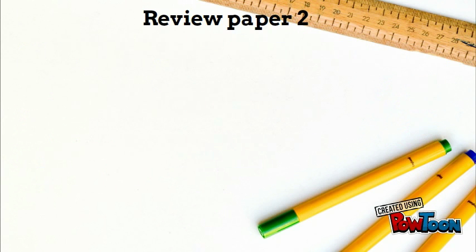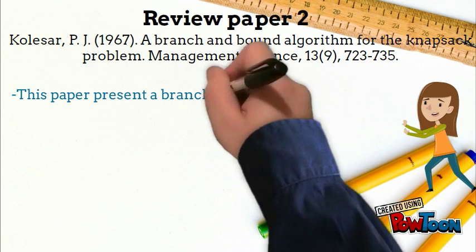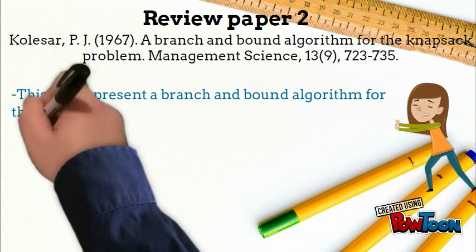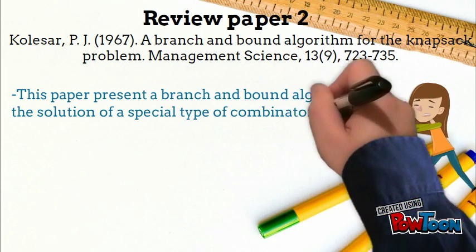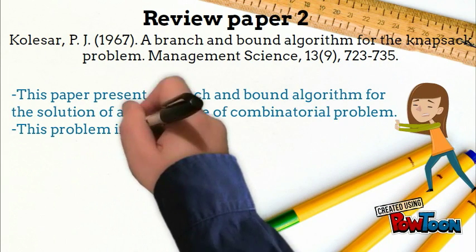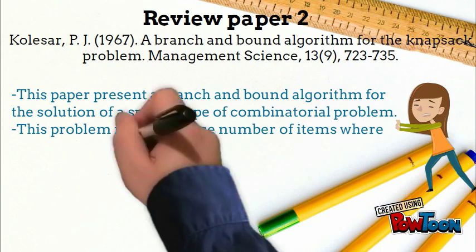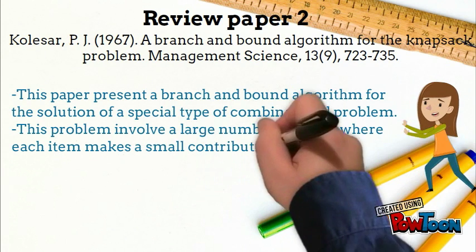Review Paper 2: This paper presents a branch and bound algorithm for the solution of a special type of combinatorial problem. This problem involves a large number of items where each item makes a small contribution to the objective function.